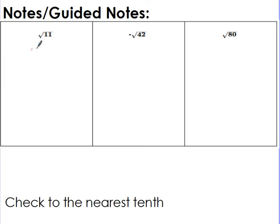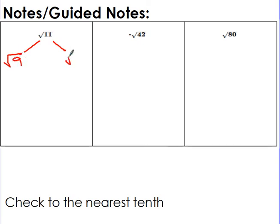For imperfect squares, here I have the square root of 11. What we're going to do is use our perfect squares to estimate a square root that is not a perfect square. For the square root of 11, I look at which two perfect squares 11 falls between. From our list, 11 is between 9 and 16. The square root of 9 is 3 and the square root of 16 is 4, so the square root of 11 must be a decimal between 3 and 4.